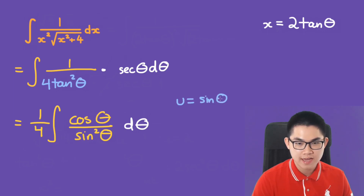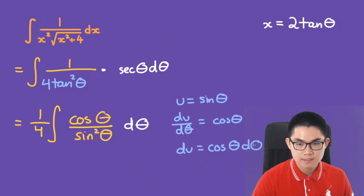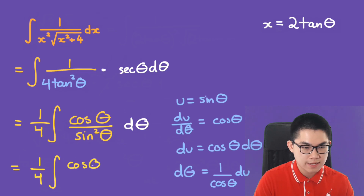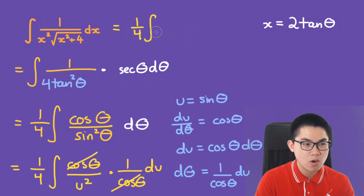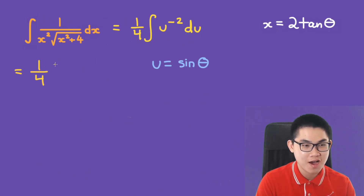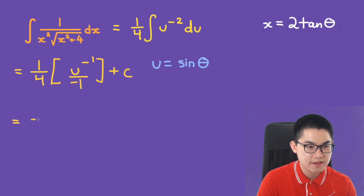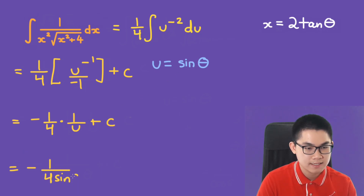Now we do u-substitution: let u = sinθ, so du = cosθ dθ, meaning dθ = du/cosθ. This gives (1/4)·∫(cosθ/sin²θ)·(1/cosθ) du, and the cosines cancel. So we have (1/4)·∫u⁻² du, whose antiderivative is u⁻¹/(−1), giving −1/(4u) + C, which is −1/(4sinθ) + C.